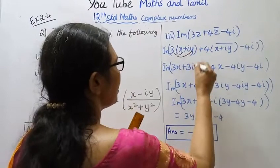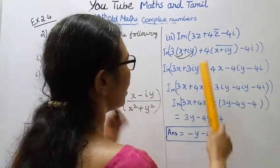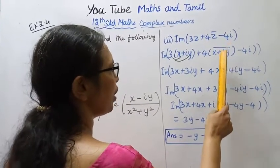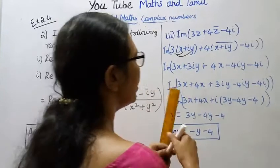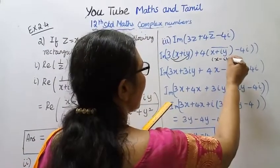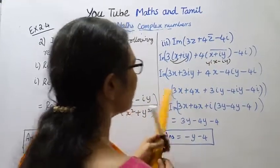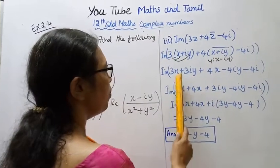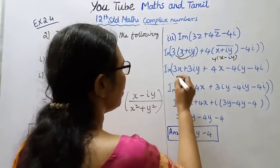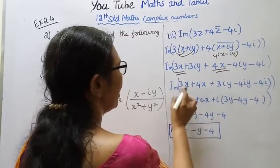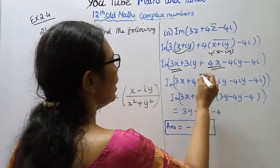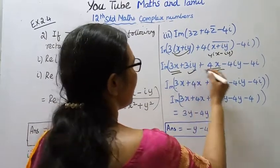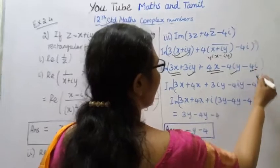The bar of x plus iy is x minus iy, so 4 times (x minus iy). This gives 4x minus 4iy. The real part is 3x plus 4x, and the imaginary part.